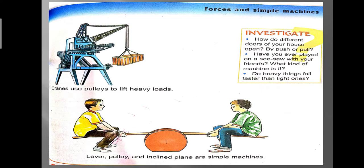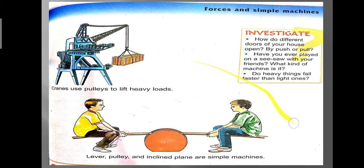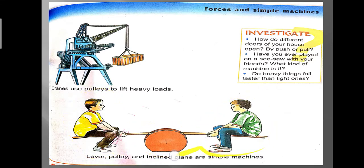Cranes use a pulley arrangement — a rope running over different sizes and numbers of pulleys — to lift heavy loads. The seesaw you find in parks is also an example of a simple machine called a lever.